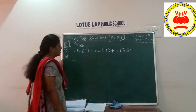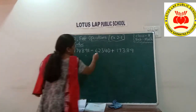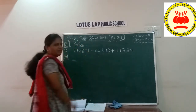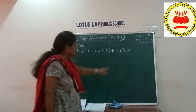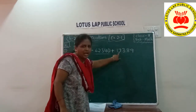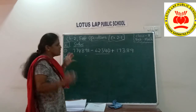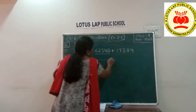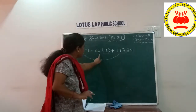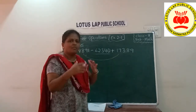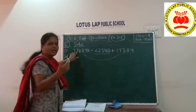First do addition and then subtraction. Which numbers do I have to add here? Observe which number is having a minus sign — the second number has minus sign before it, so that number I have to subtract. This number has a plus sign, so this number I have to add. So first, which two numbers do I add? These two numbers — then from that answer I subtract the other number. Always do addition first and then subtract.